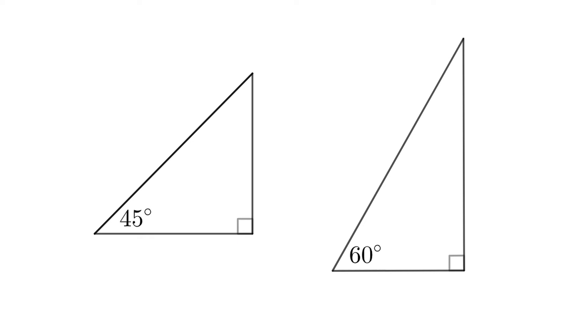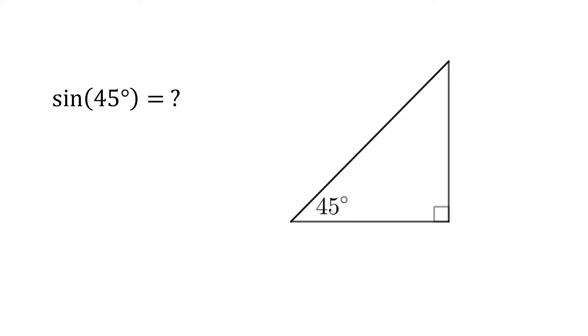For the sine of 45 degrees, for example, we need a right angle and a 45 degree angle. The other angle must also be 45 to give a total of 180. Now the triangle is isosceles, so these lengths must be equal. Let's make them length 1, because scaling the triangle up or down won't affect the ratios of its sides.